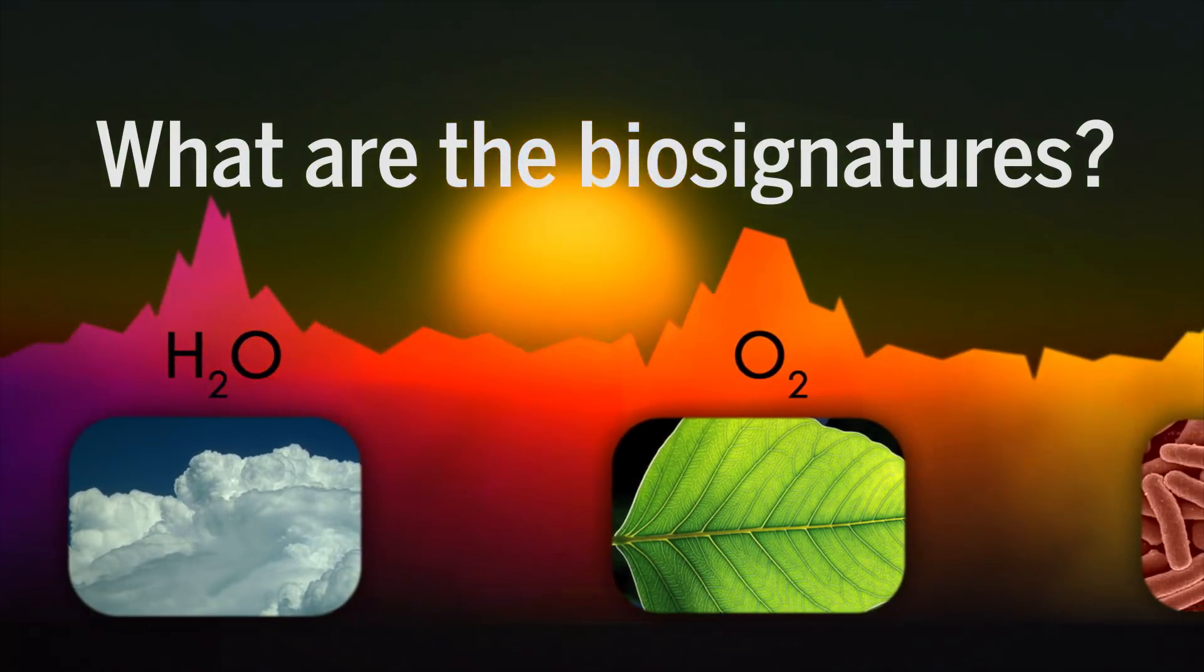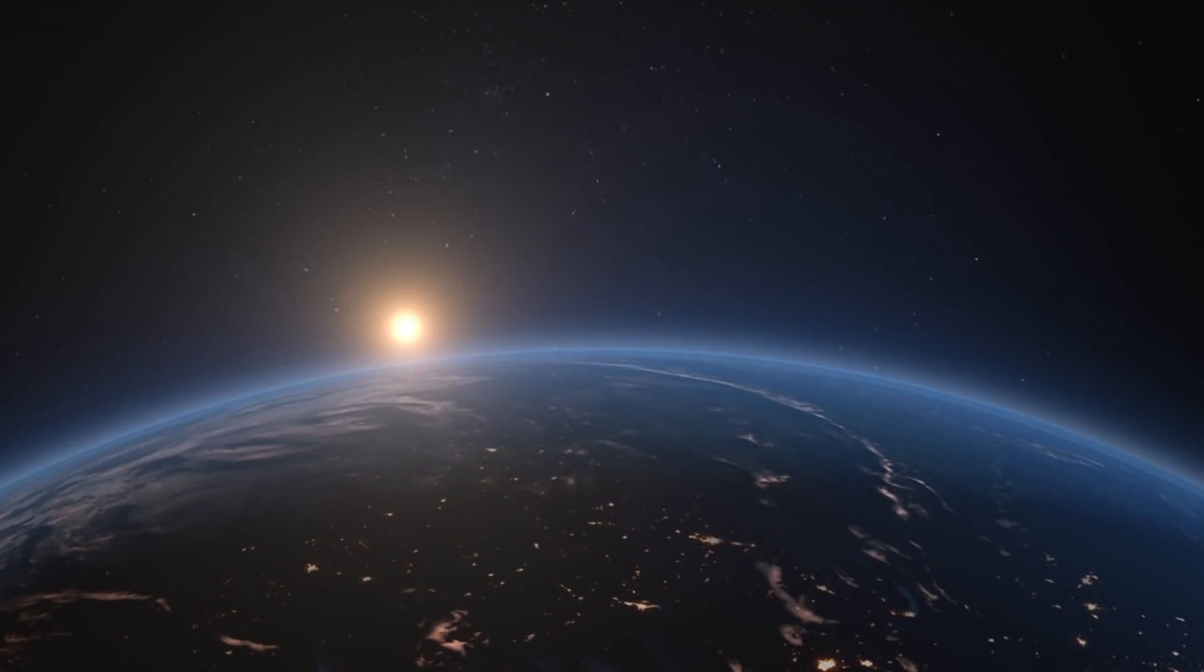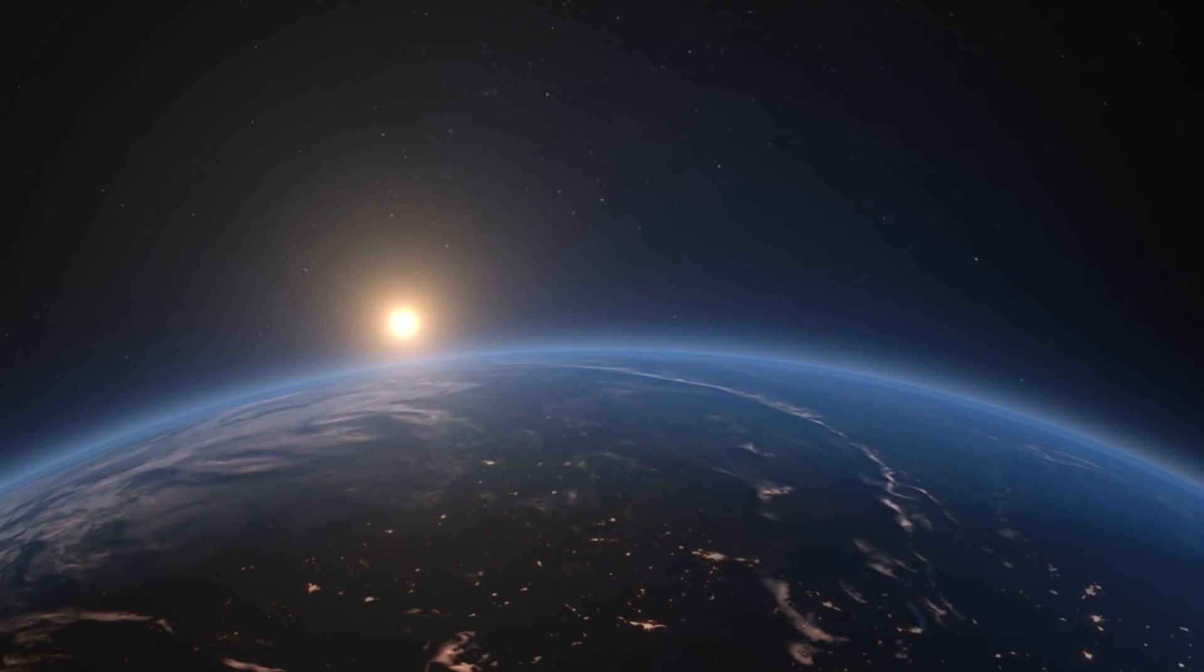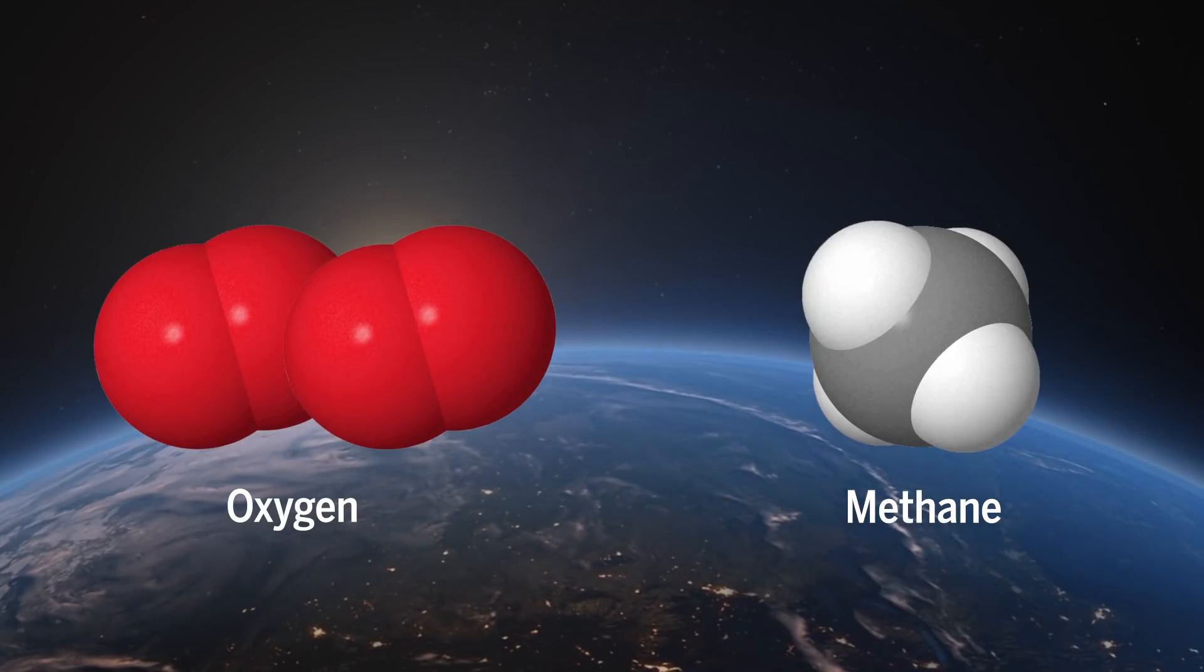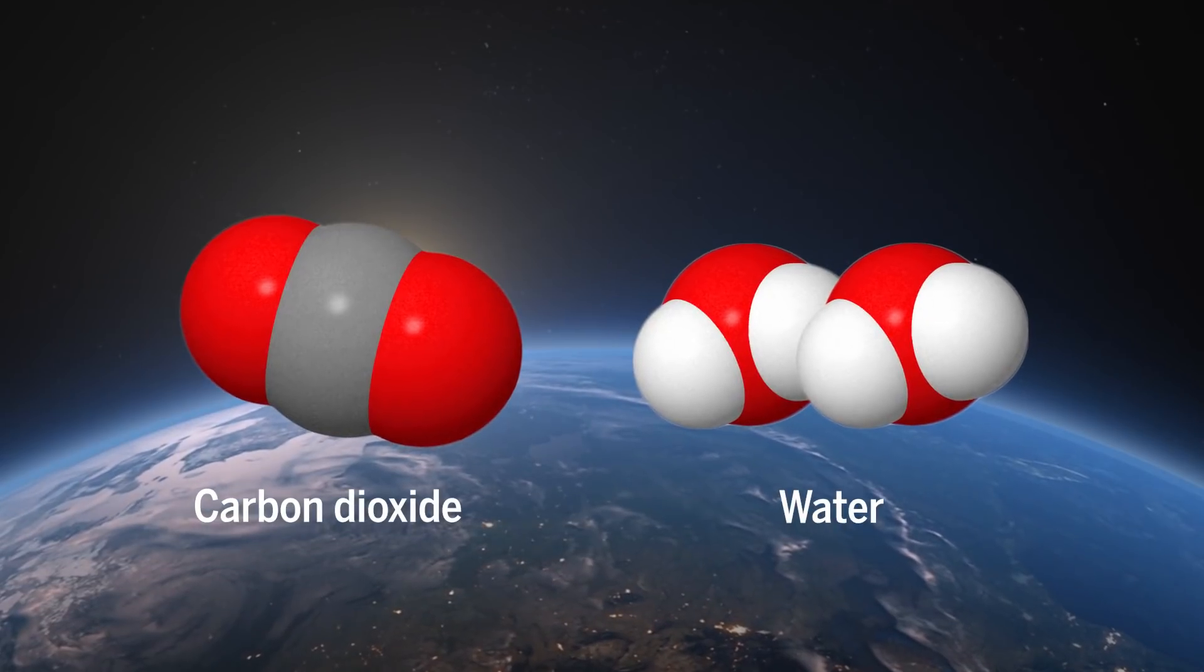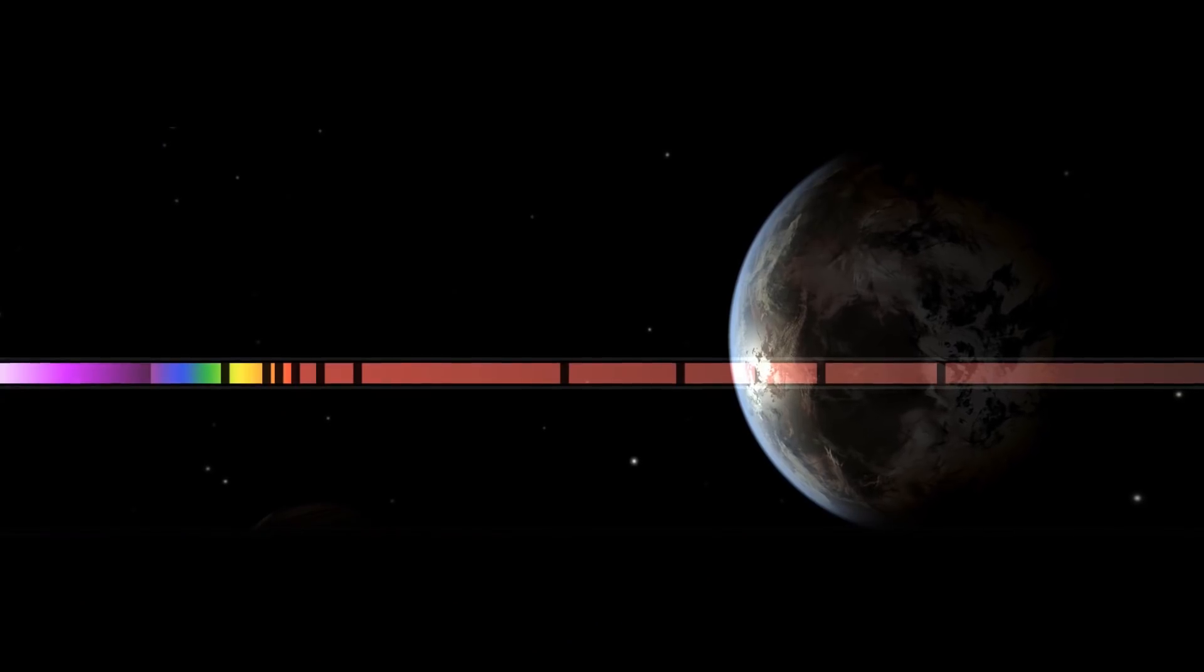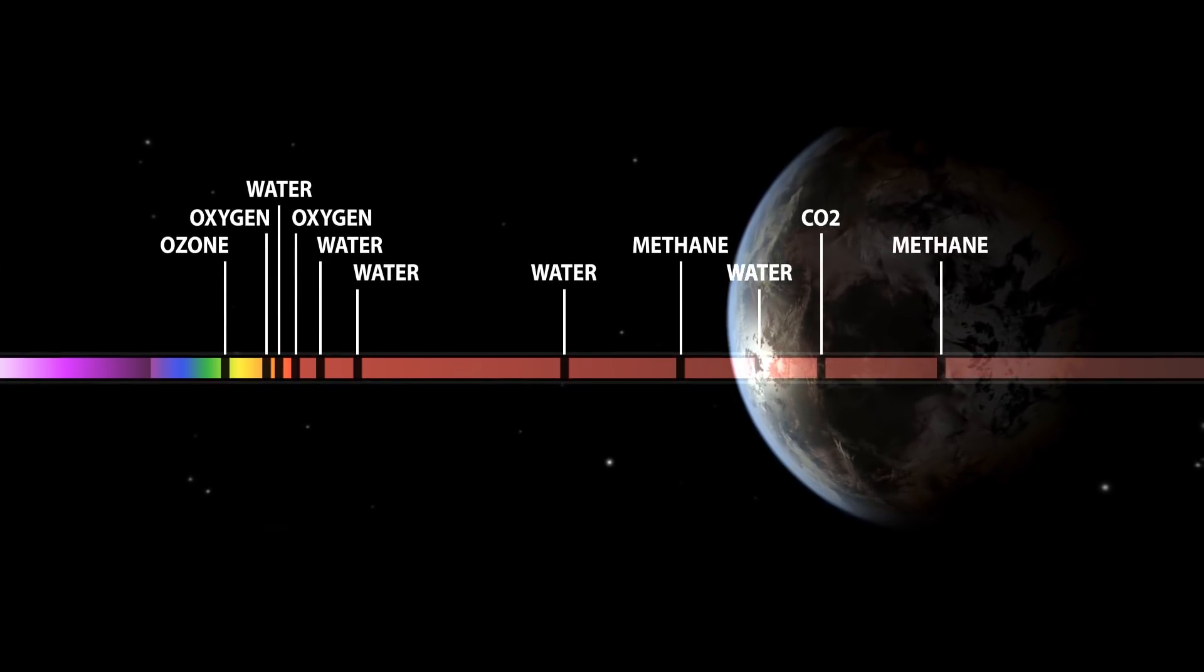But once we can see exoplanets directly, what signs should we look for to tell us that life is present? What are the biosignatures? If we take Earth life as a guide, then looking for the byproducts of biological processes such as oxygen and methane seems like a good approach. These gases would normally react and turn into something else, so if they are detected in large quantities, it is a sign that something such as life is replenishing them.